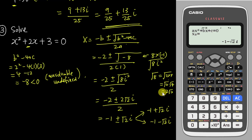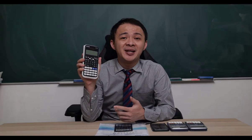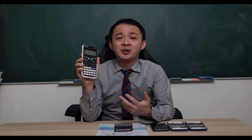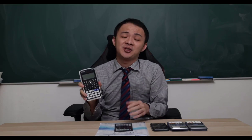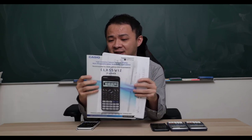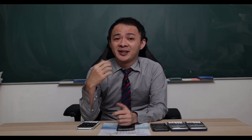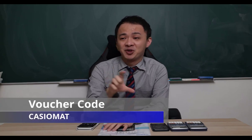I will make another video about complex numbers focusing on polar coordinate form. I hope you find this video helpful. If you're interested in getting this calculator, I'll share a shopping link in the description below — it will bring you to the Casio official store. Currently Casio Malaysia is doing a promotion: whoever buys from the official store gets a free Casio L file, and another five ringgit discount using my voucher code.